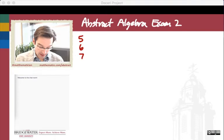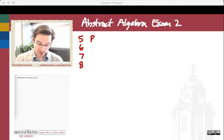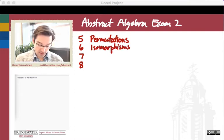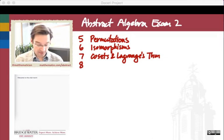In our course, these go by goals number five through eight. Number five relates to permutations and symmetric groups. Goal six relates to isomorphisms. Goal seven is cosets and Lagrange's theorem — probably one of the most important milestones in the entire course. And then finally, goal eight is direct products of groups.